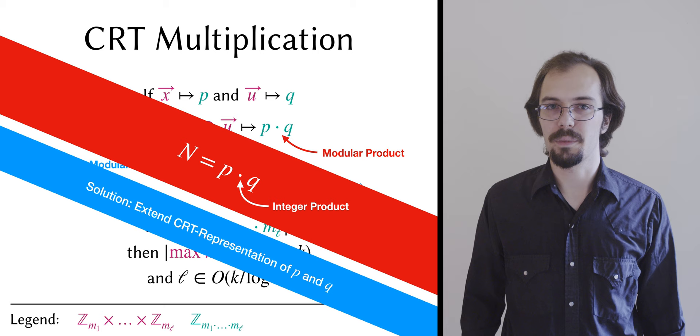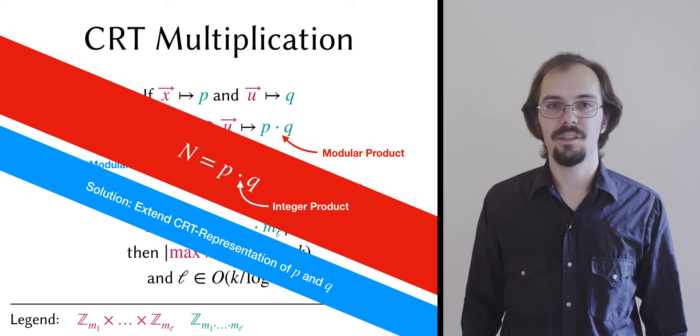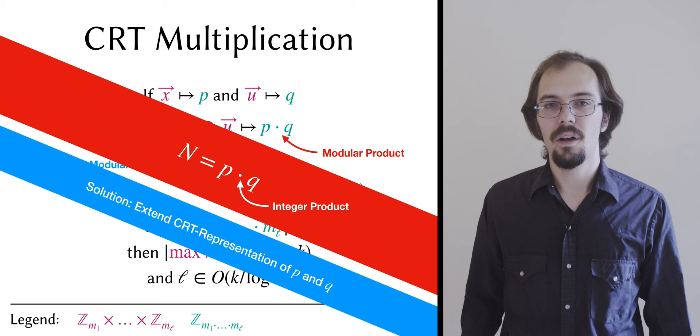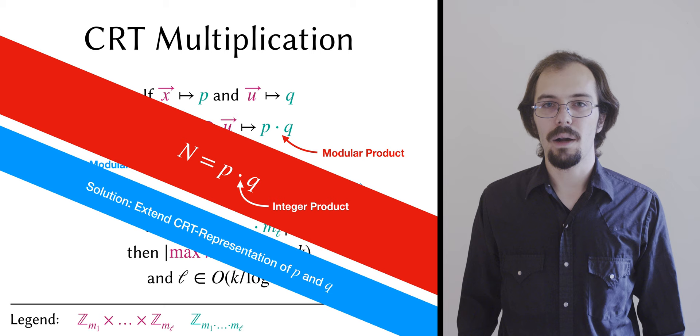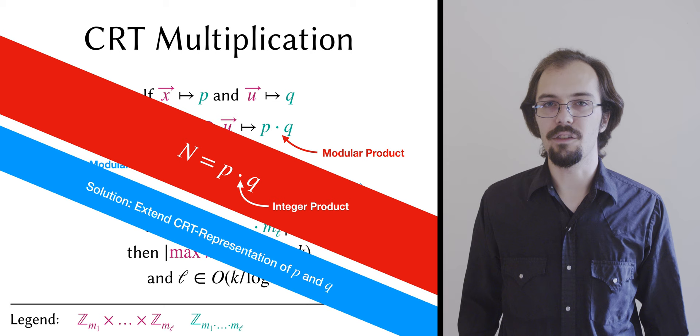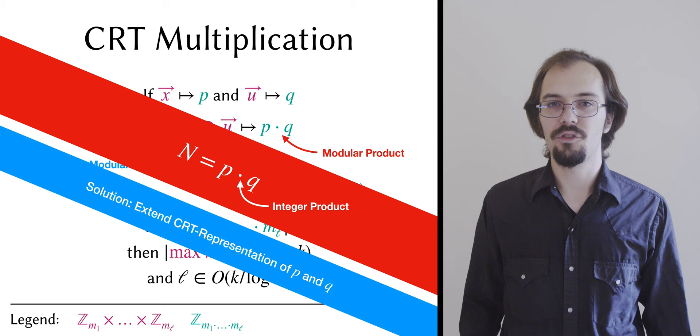Before we move on, I should mention that because this CRT extension operation is local, corrupt parties can do whatever they want. Also, because there's no authentication on the output shares of our elementwise multiplication, corrupt parties can lie about the shares that they got. I haven't taken pains to show you how we achieve malicious security, so it's important to know that even in the malicious version of our protocol, this sort of cheat is still possible, and we have to account for it later in our consistency check.